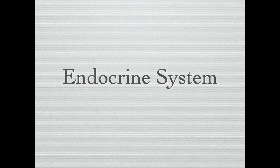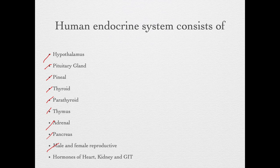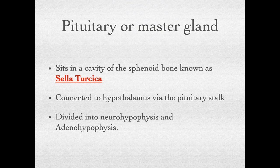The topic under discussion today is the endocrine system. There are two methods of regulation of body function: neural regulation and chemical regulation. The chemical regulation is done with the help of the endocrine or ductless system. The human endocrine system consists of the hypothalamus, pituitary gland, pineal gland, thyroid gland, parathyroid, thymus, adrenal, pancreas, male and female reproductive glands, and hormones of the heart, kidney, and GIT.